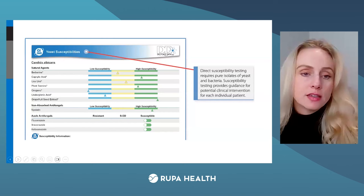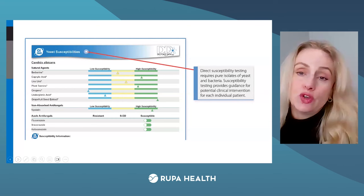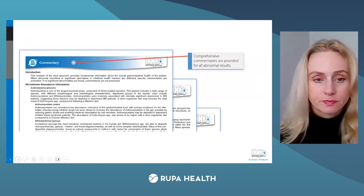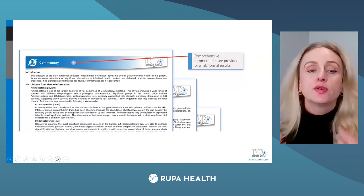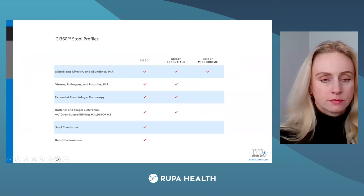Here you see those sensitivities. For this example with Candida, you see the natural agents and then the antifungals. This is directly your patient's isolate — not referenced from somewhere else. We take those isolates directly in the lab with the agents and report that data to you. At the end of GI 360, there is specific commentary associated strictly with your patient's results.